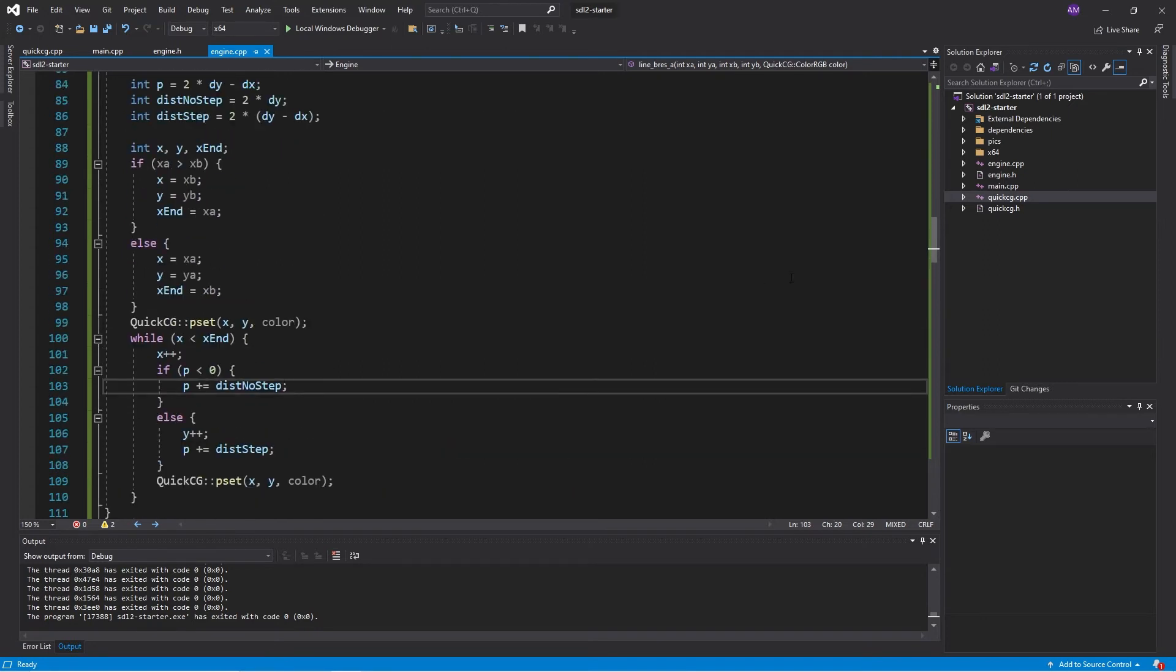Then we step forward, so we loop until x end. Each time, if our decision parameter is less than zero, we do nothing to y. We don't change y. We do change y if our decision parameter is bigger than or equal to zero, and we also increment our decision parameter accordingly.